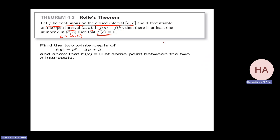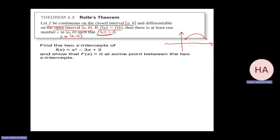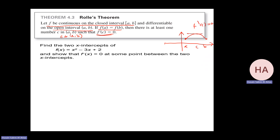You can think of it this way: if you have a function where f(a) equals f(b), there is a constant c between a and b. The theorem says that f prime at c equals 0. This is what the theorem is saying.